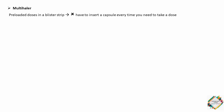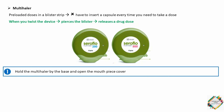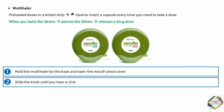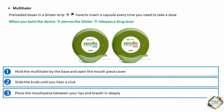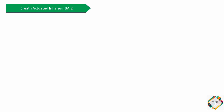Next is the Multihaler, which contains pre-loaded doses in a blister strip — so you do not need to insert a capsule each time. Twisting or rotating the device pierces the blister and releases a drug dose. It also has a dose counter to monitor remaining doses. To use it: hold the Multihaler by the base and open the mouthpiece cover, slide the knob until you hear a click, place the mouthpiece between your lips and breathe in deeply, then remove the device and hold your breath for about 10 seconds.